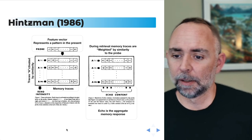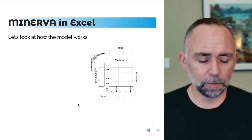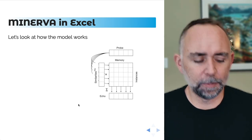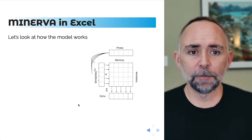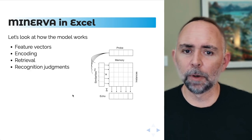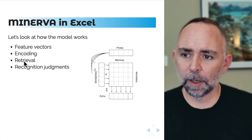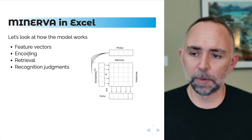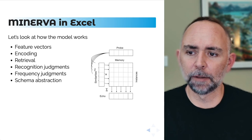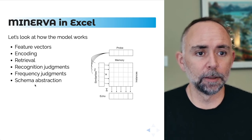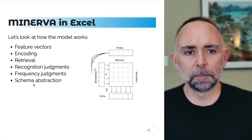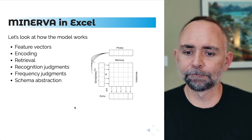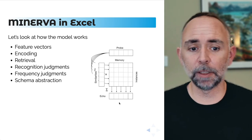We're nearly done. I'm going to stop this mini lecture and then open up Microsoft Excel. We're going to look at how this model works in more detail, step by step, and we're going to apply it to a few different cognitive phenomena to see how this thing is actually used to explain particular abilities. So that's it for now — we'll see you on the other side.